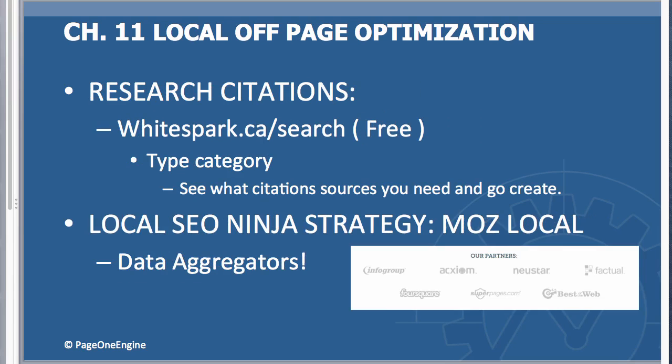What I want to talk about now is how to research your citations — to see which citations you need and which citations your competitors have, so you can compare the two. The tool I like to use, besides BrightLocal, is whitespark.ca search. It's a free tool, and once you input your data it's going to show you everything you need to get those citations that you don't have.